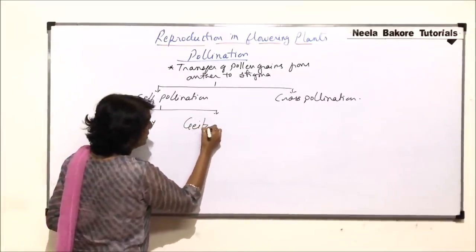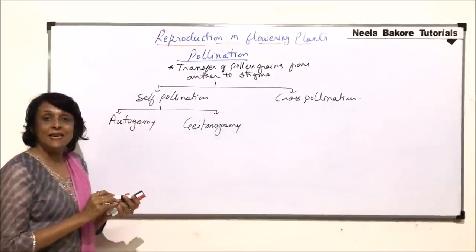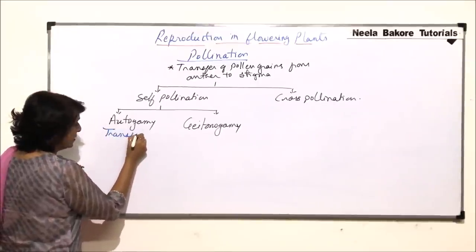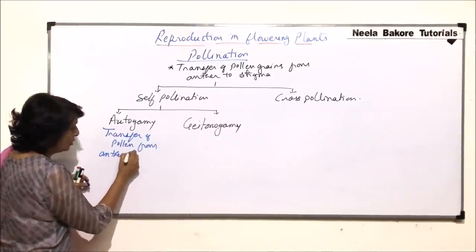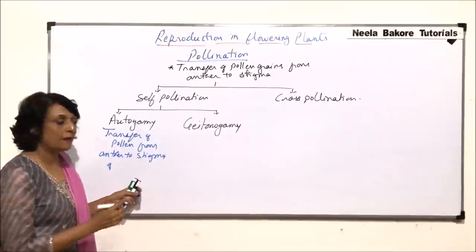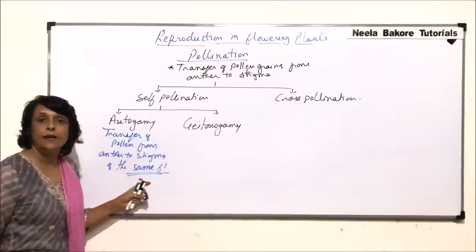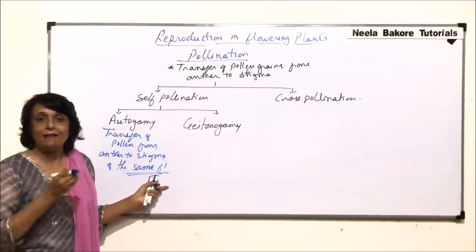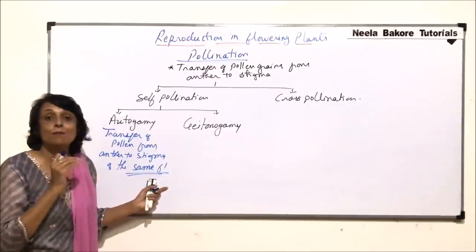Autogamy means transfer of pollen from anther to stigma of the same flower. For this, the flower has to be bisexual, so that it has both anther and stigma. The anther produces pollen grains and they get transferred to the stigma of the same flower.